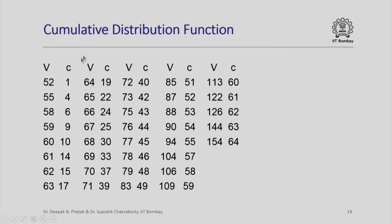First, we calculate the cumulative distribution function, or CDF, of a histogram. The CDF is simply defined as the number of pixels below a certain value. So for example, there is only one pixel below 52. There were 3 pixels at 55, so below 55 there are 3 + 1 = 4 pixels. Below 58 there are 6 pixels, below 59 there are 9 pixels, and so on. This gives you the cumulative distribution function. Observe that the largest value is 154, so below 154 there are 64 pixels.